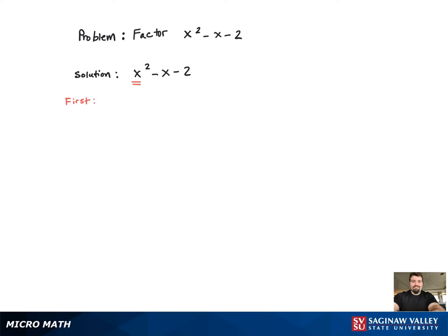So first I focus on the x squared. And what that means is that I can break it up into two factors, and they're both going to have an x with a coefficient of 1 first.